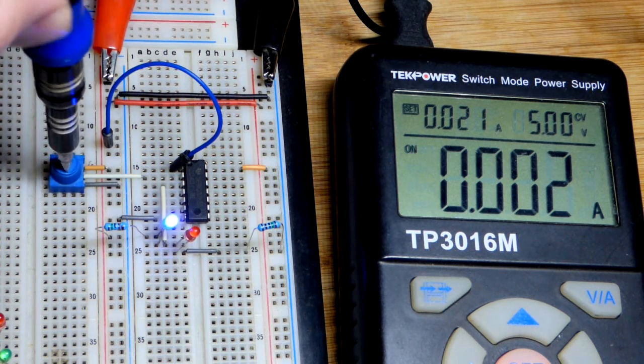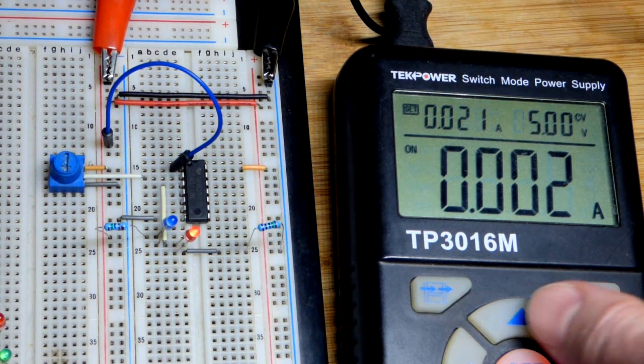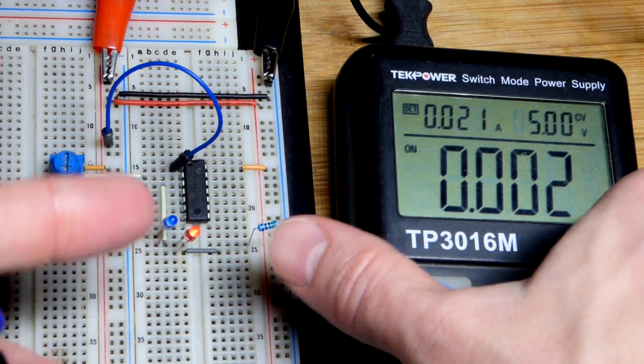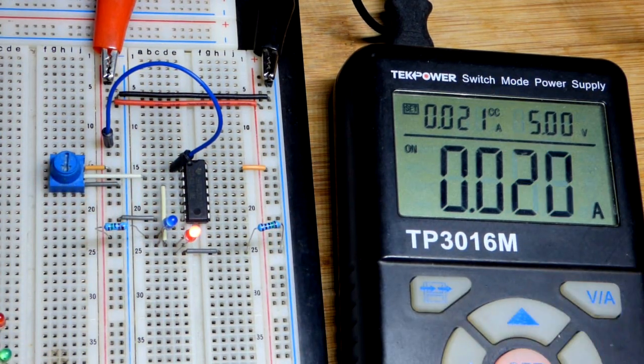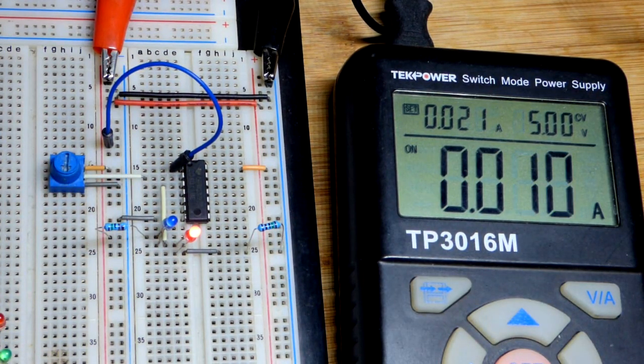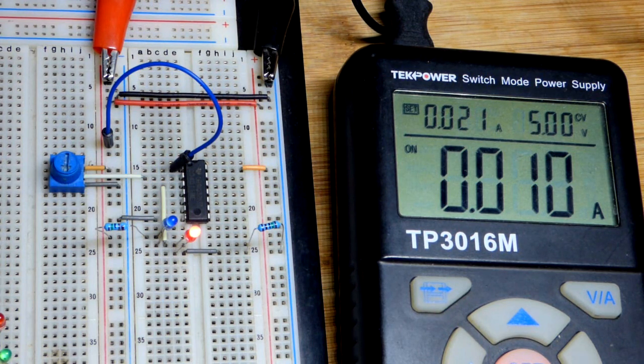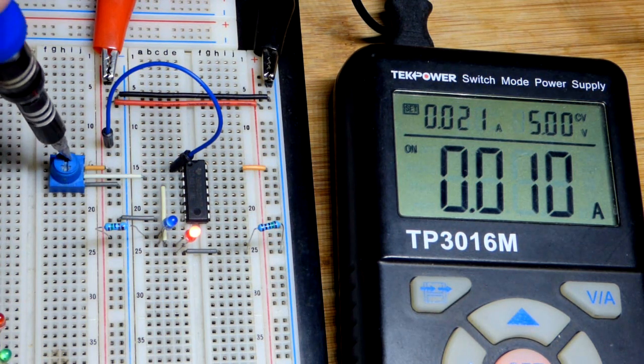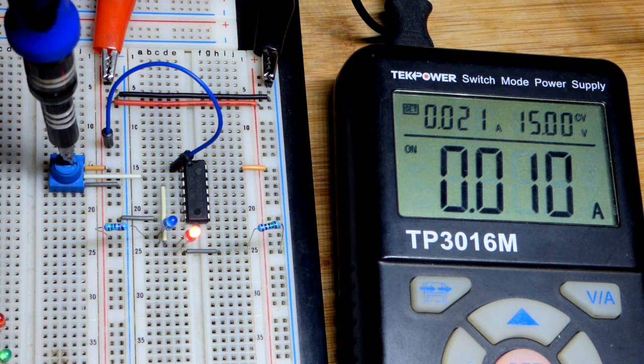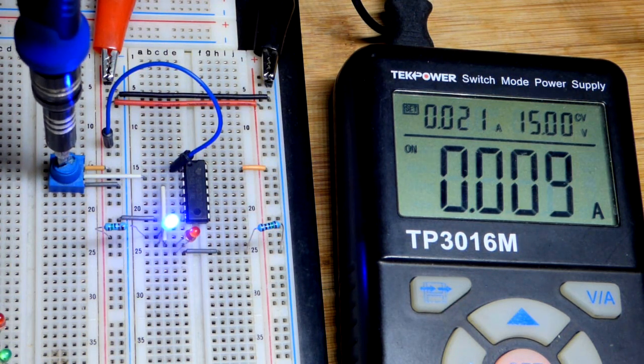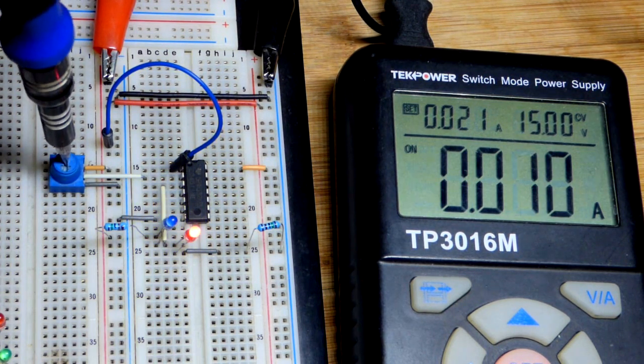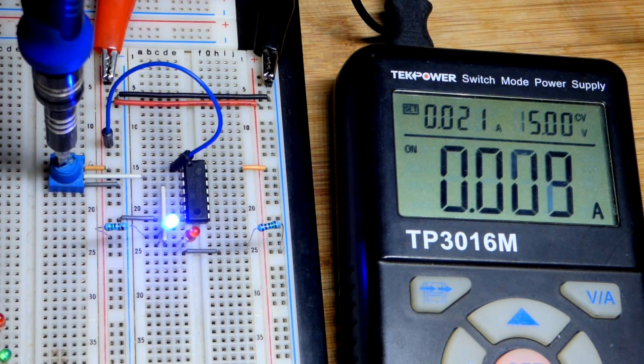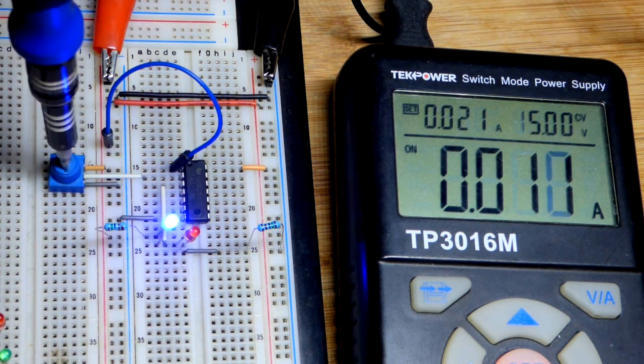Maybe that is just the current we can get due to the voltage, but I also have somewhat high value resistors here. So we can go to fifteen volts - there you can see fifteen volts, we have a lot more current. So part of that's due to the resistor value, but also the output is limited to how much current it can output based on the supply voltage.